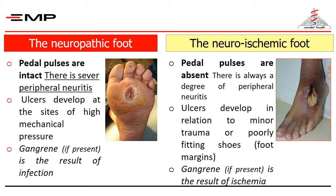The basis of successful management of foot ulcers or foot with gangrene in a diabetic patient, with or without infection, is to differentiate between two main syndromes. The first is what we call the neuropathic foot, where pedal pulses are intact, there is severe peripheral neuritis, ulcers develop at the site of high mechanical pressure, and gangrene, if present, is the result of infection.